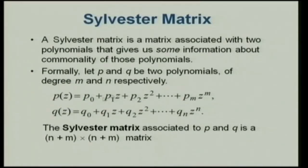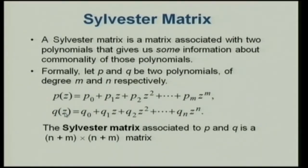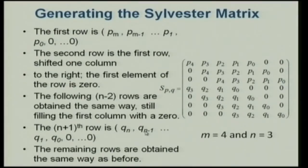To form the Sylvester matrix: take the coefficients of p — p₀ through p_m, giving m+1 coefficients — and q with n+1 coefficients. You form the matrix by stacking shifted rows. For example with m=4, n=3: first row is p4, p3, p2, p1, p0, 0, 0; next row shifts right with a leading 0; and so on. Then you write the q rows similarly, shifting each time.